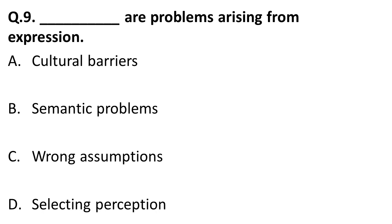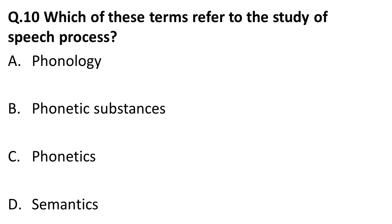The next question: blank problems are problems arising from expression. Expression refers to meaning, so these are problems arising from meaning. When a message can lead to two or more meanings, that creates semantic problems. For example, the word 'child' can be interpreted as a girl, boy, or kid — it has more than one meaning. Problems arising from expression or meaning are called semantic problems.